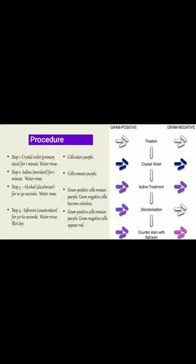In step one, crystal violet (the primary stain) is added for one minute — cells stain purple. In step two, iodine (the mordant) is applied — cells remain purple. In step three, alcohol decolorizer is applied for 10 to 30 seconds — gram-positive cells remain purple while gram-negative cells become colorless, as seen in the figure. In step four, safranin (the counter stain) is applied — gram-positive cells remain purple and gram-negative cells appear red.